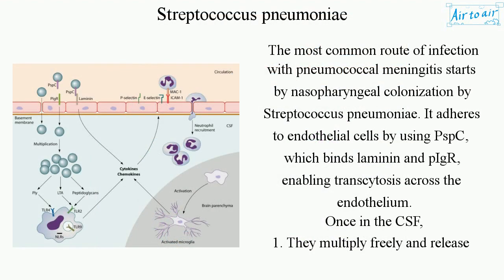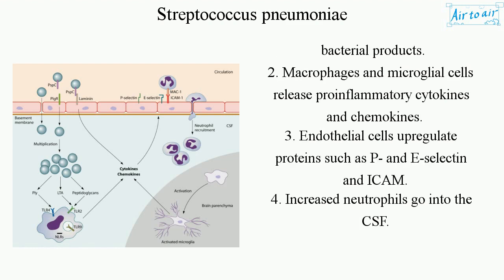The most common route of infection with pneumococcal meningitis starts by nasopharyngeal colonization by Streptococcus pneumoniae. It adheres to endothelial cells by using PSPC, which binds laminin and PIGR, enabling transcytosis across the endothelium. Once in the CSF: (1) they multiply freely and release bacterial products; (2) macrophages and microglial cells release pro-inflammatory cytokines and chemokines; (3) endothelial cells upregulate proteins such as P&E selectin and ICAM; (4) increased neutrophils go into the CSF.